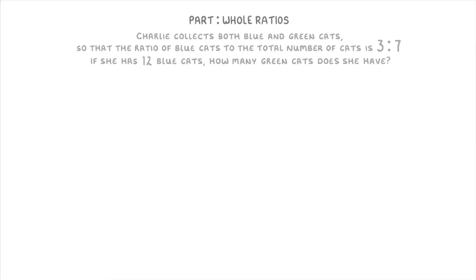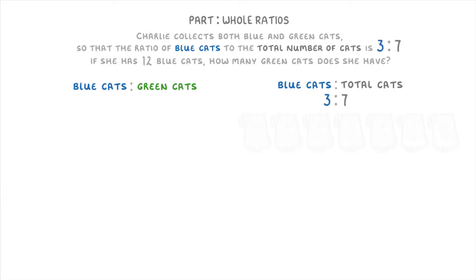Now, there's a couple of different ways that you could do a question like this, but the way that I would do it is to start by trying to work out the ratio of blue cats to green cats. As the question tells us that the ratio of blue cats to total cats is three to seven, that means that for every seven cats she has, only three of them are blue, which means that the other four must be green.